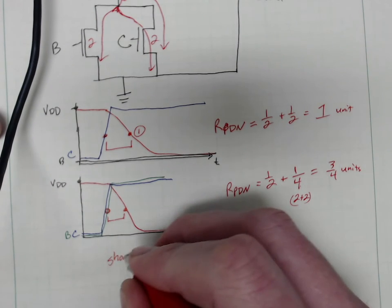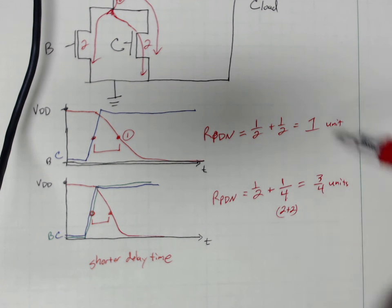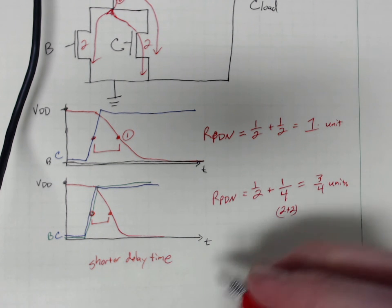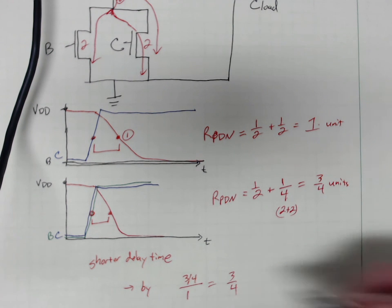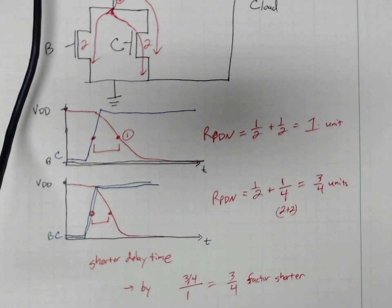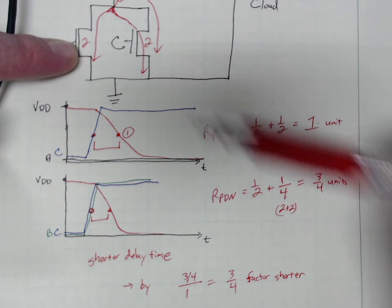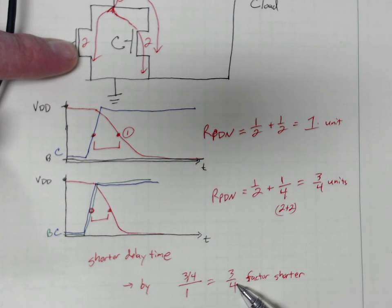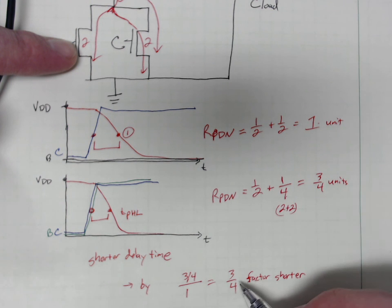And if you look 50% to 50%, this is a shorter delay time. Because we have an idea of the general trend of the resistances, we know that our delay time goes from 1 and it goes down to 3/4. And we also know by a factor of 3/4 to 1, or 3/4, the math works out—factor shorter. So we know that it is shorter. It makes sense that we have this equivalent series resistance is less. We can even predict how this series resistance changes—it's less. We're going to expect to see a T_PHL that's 3/4 or 75% smaller.